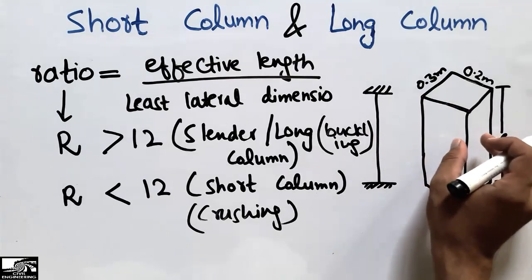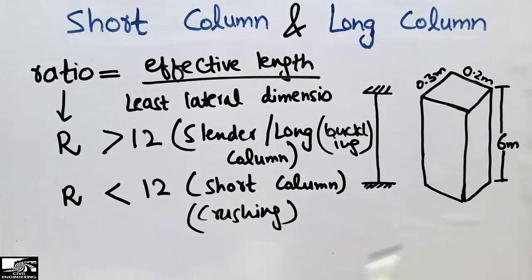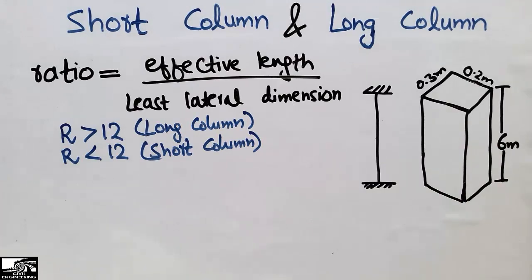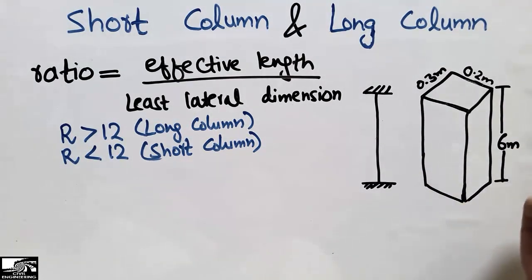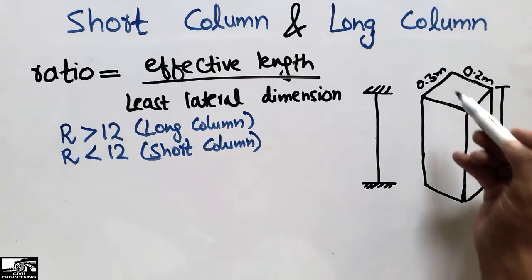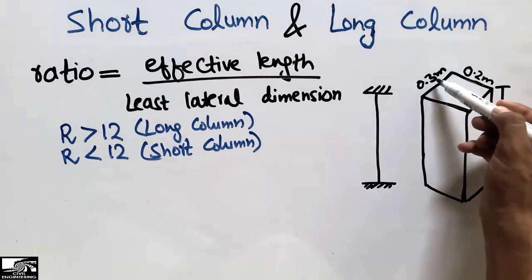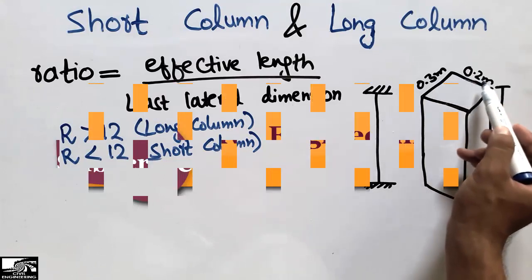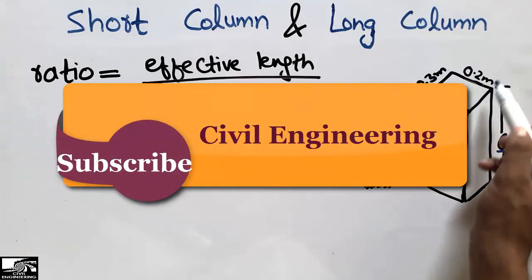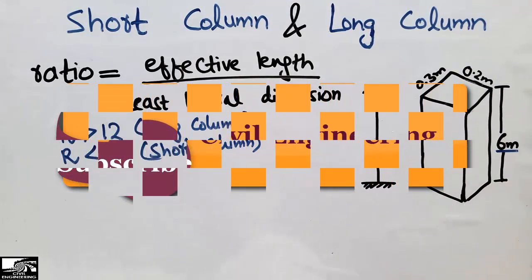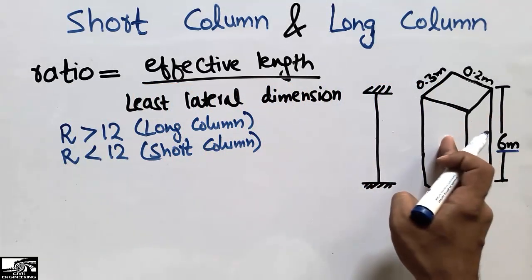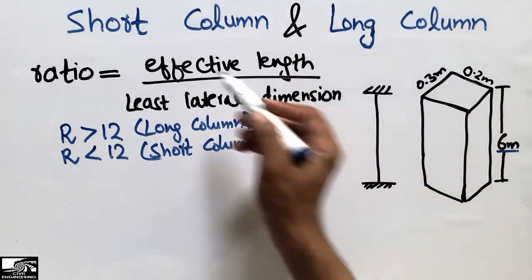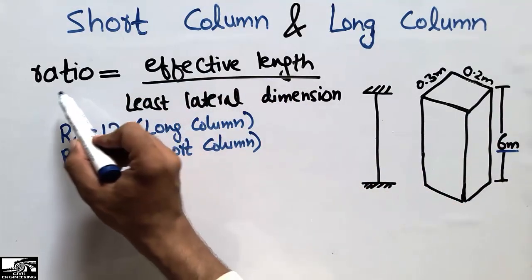Now I will do an example to show you which type of column this is — either a short column or a long column. Consider this example: a column is given with a total height of 6 meters and cross-sectional dimensions of 0.3 meters and 0.2 meters. So it is a rectangular column, and we want to find whether it is a short column or a long column.